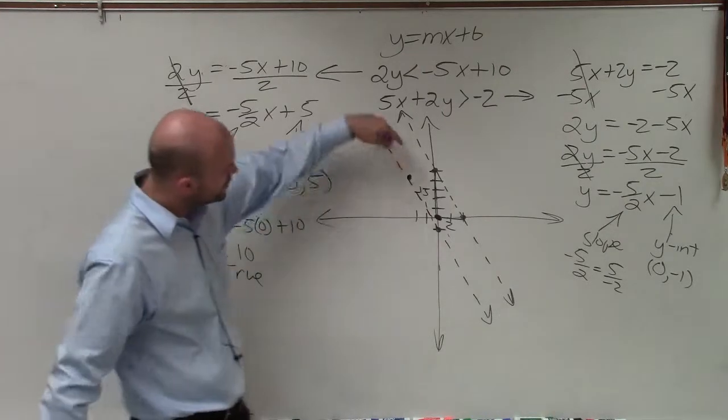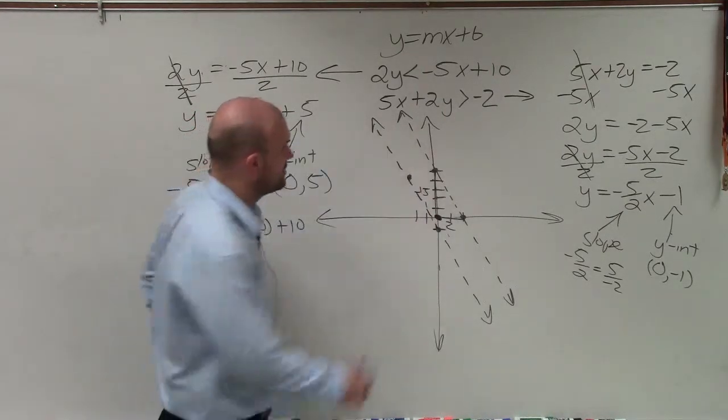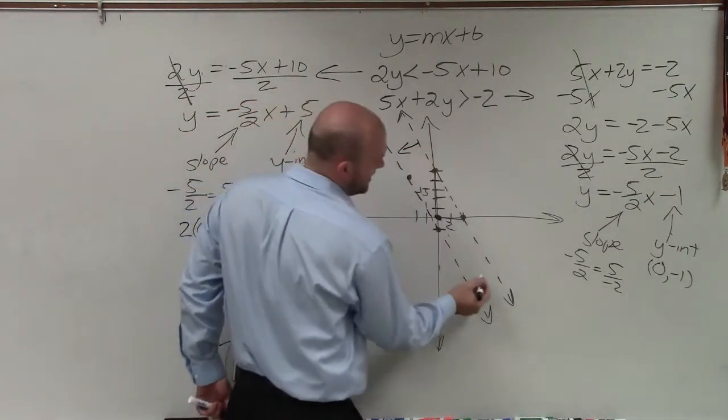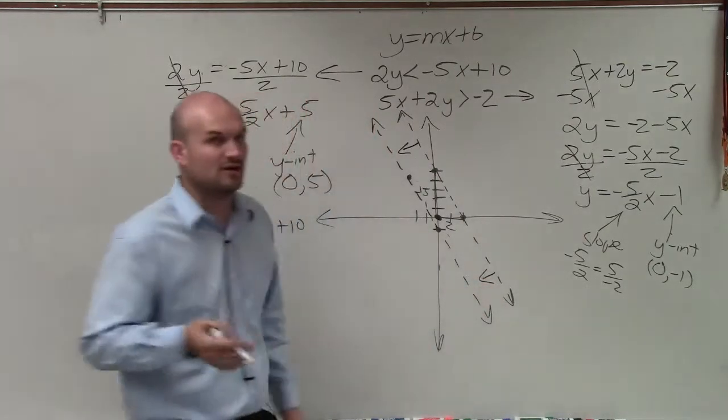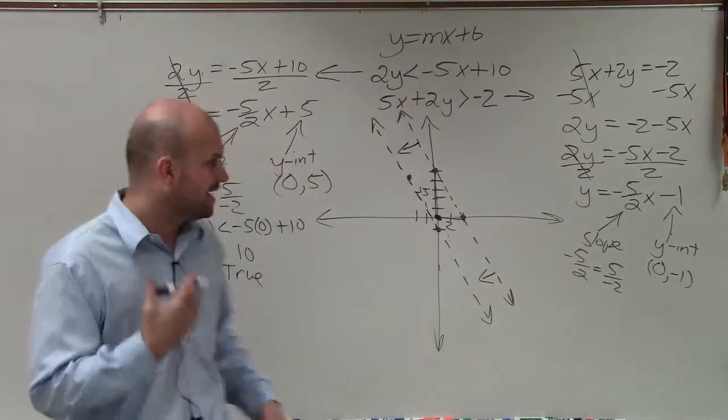So since it's true, since my test point is true for this boundary line, I am going to shade below it. And to represent that, I'm just going to show two arrows so I remember where I'm shading. I don't want to shade yet.